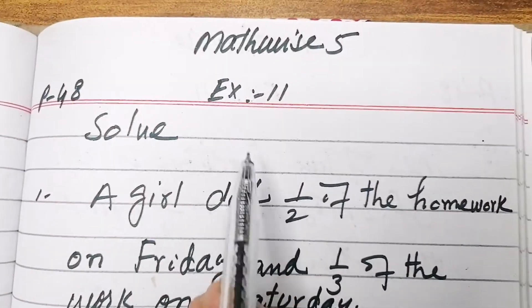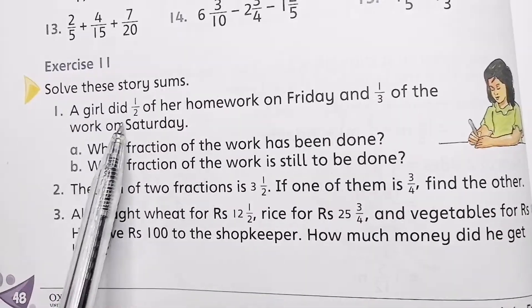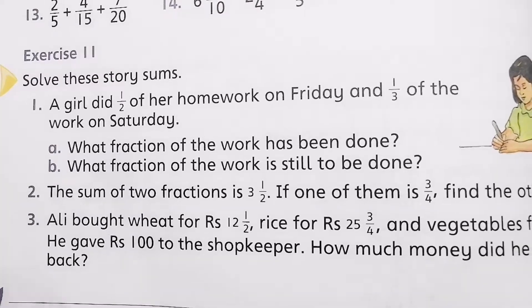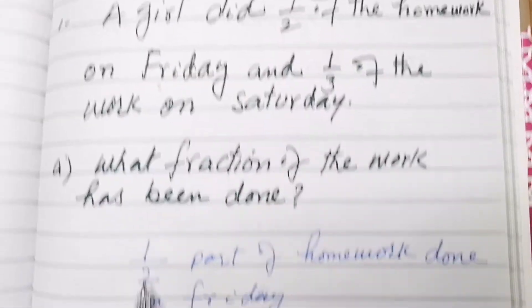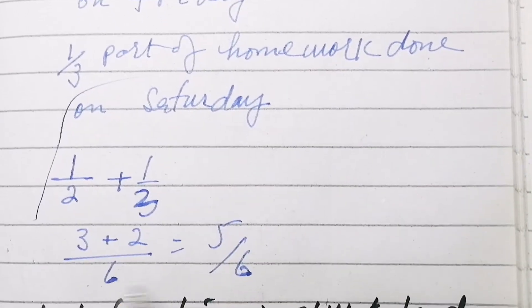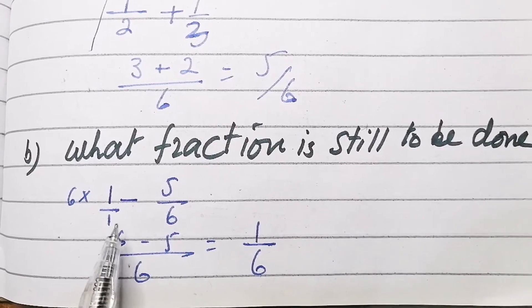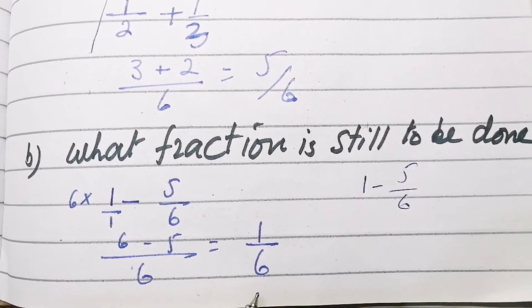Now Exercise 11 on page 48 of Mathwise 5. Question 1: A girl did 1 over 2 of her homework on Friday and 1 over 3 of the homework on Saturday. We have to find two things: what fraction of the work has been done, and what fraction is still to be done. Adding 1 over 2 and 1 over 3 gives 5 over 6 — that is the fraction done. Subtracting from 1: 1 minus 5 over 6 equals 1 over 6, which is still to be done.